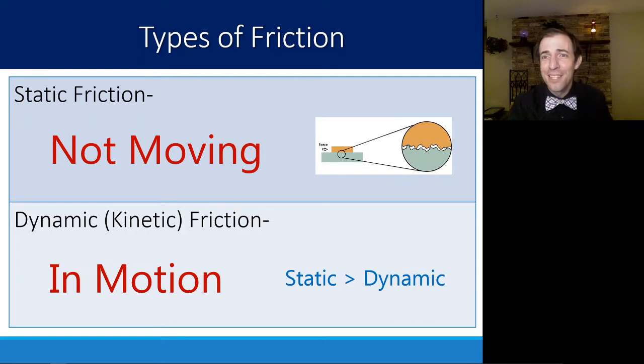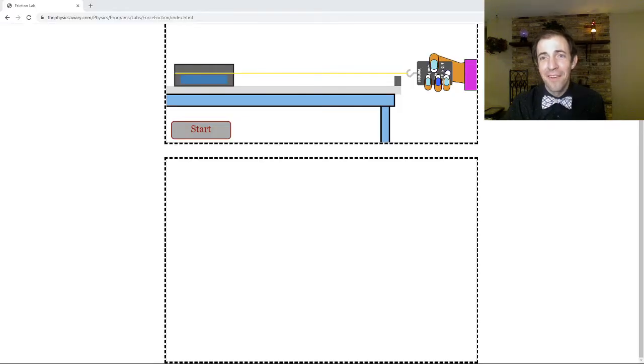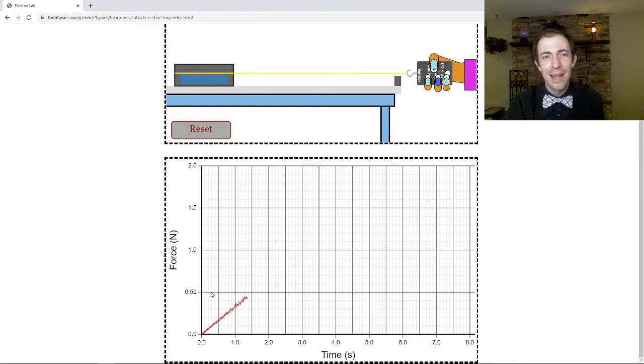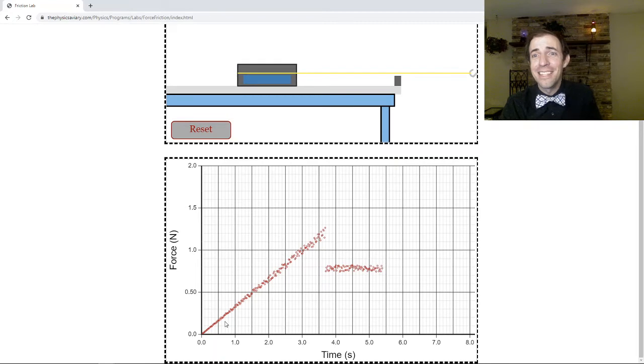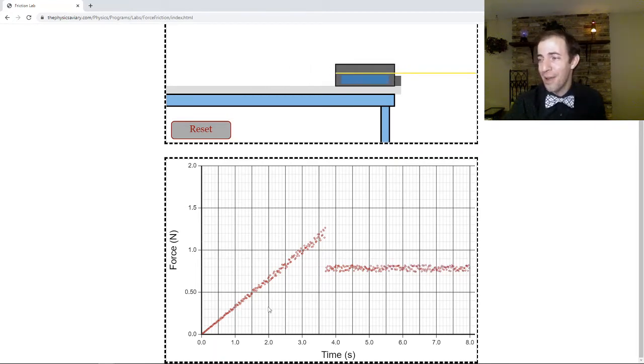It is useful to see this in a simulation. Here I have a simulation of someone pulling an object across the table. As with anything you're trying to pull, you need to pull a certain amount of force before it starts to move.